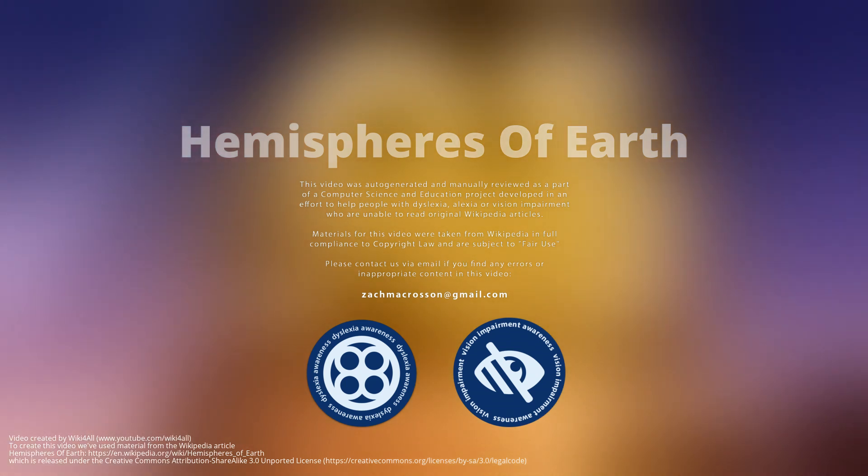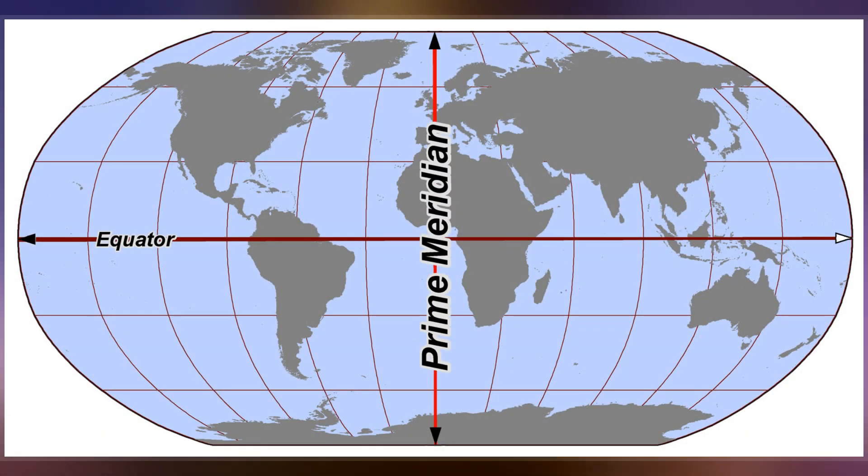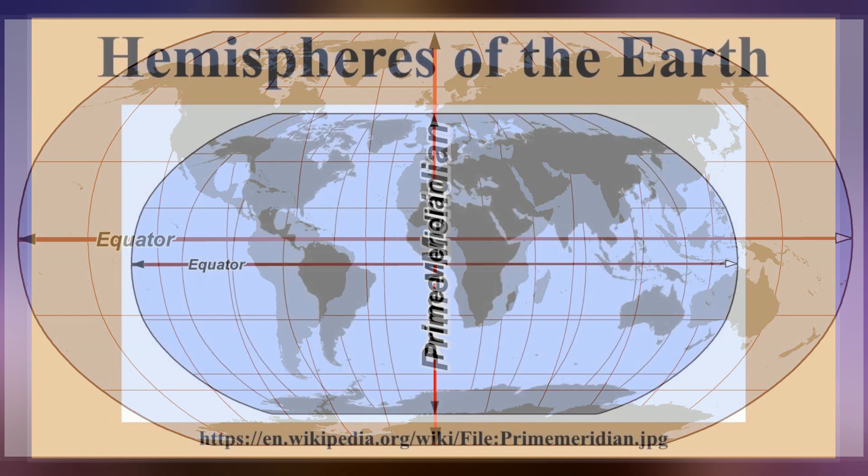In geography and cartography, the hemispheres of Earth refer to any division of the globe into two hemispheres (half of a sphere). The most common such divisions are by latitudinal or longitudinal markers.